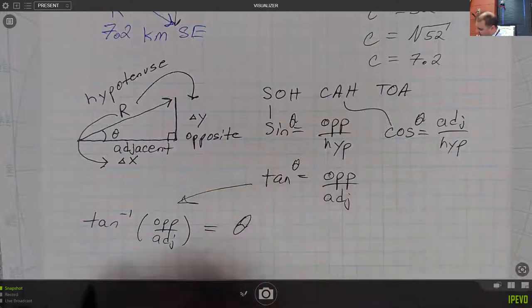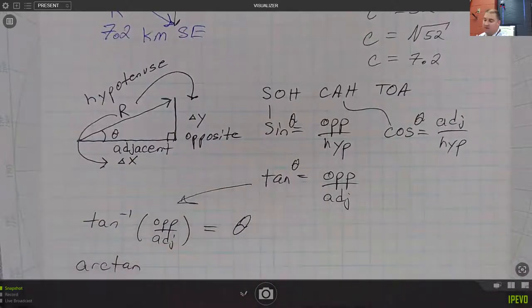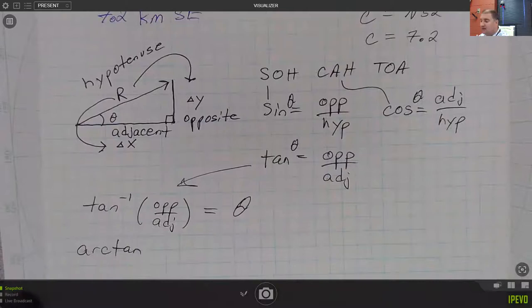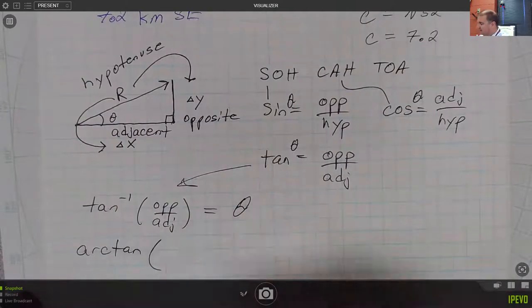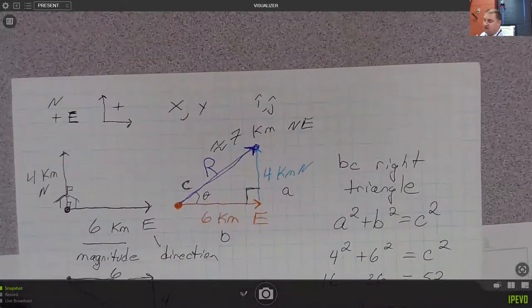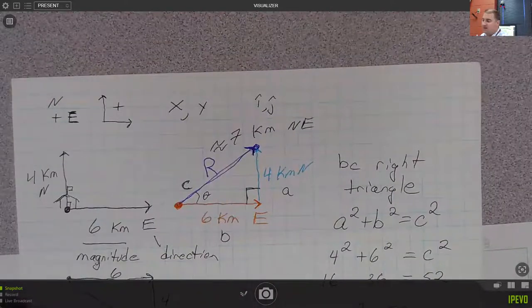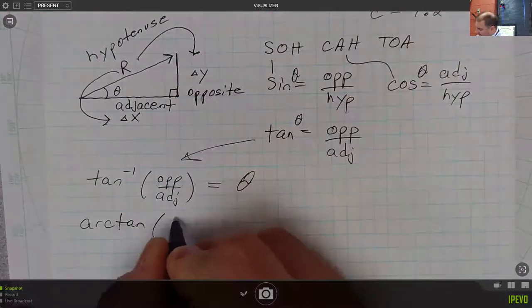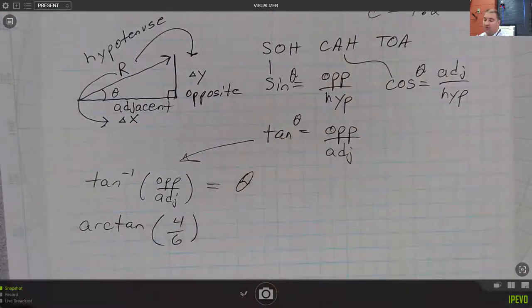You might also see people refer to this, or I might refer to it occasionally as arctan, that's just the inverse tangent. In this case, the opposite side in our triangle is 4, and the adjacent side in our triangle is 6, so 4 over 6, or 2 thirds,